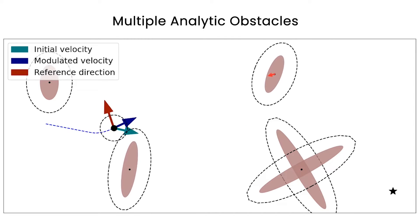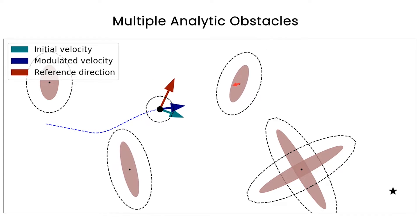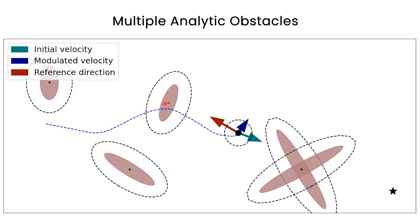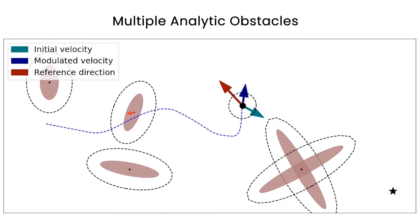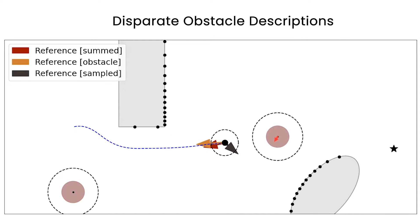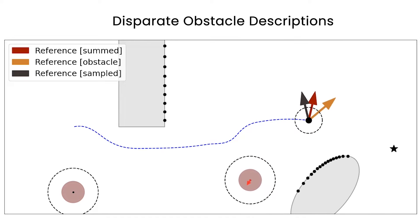The method can be applied to analytic obstacle descriptions. The single reference direction enables collision-free navigation at a low computational cost. Disparate data such as analytic and sampled obstacle descriptions can be fused by evaluating the two reference directions.